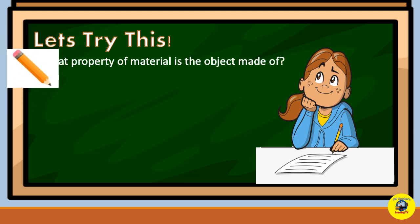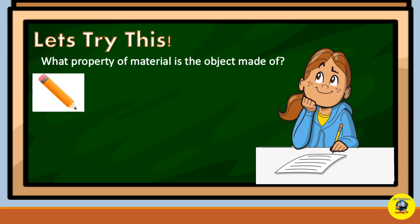What property of material is the object made of? The first picture is a pencil. Is it hard, conductor, opaque, or heavy?